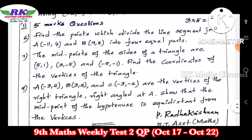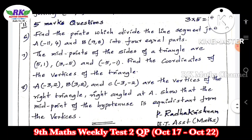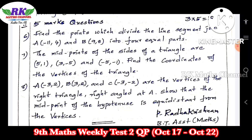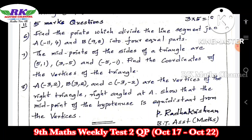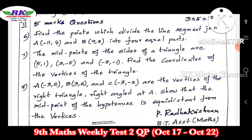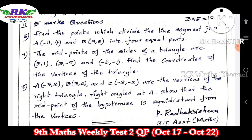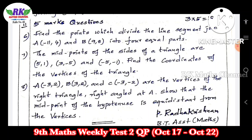The five-mark section has three questions — three times five marks equals fifteen marks. Question number six: find the point which divides the line segment joining A and B into four equal parts. The line segment AB is divided into four equal parts, with three points dividing it equally — this is an example problem.